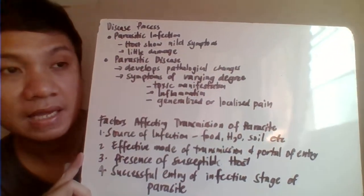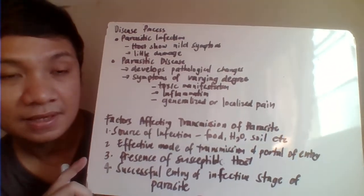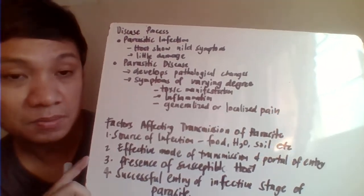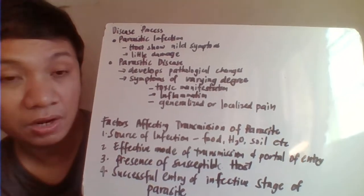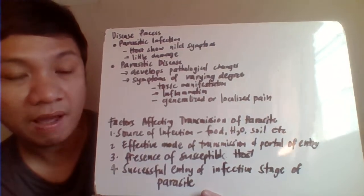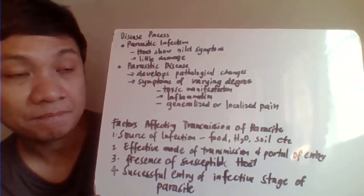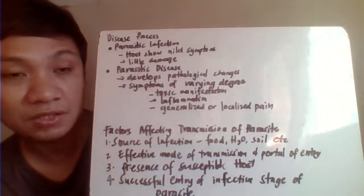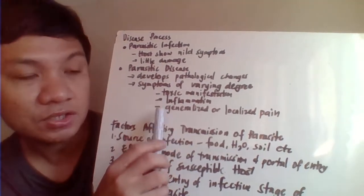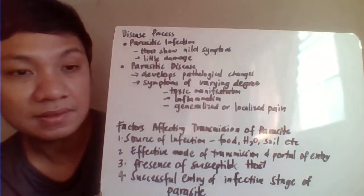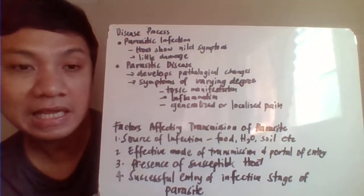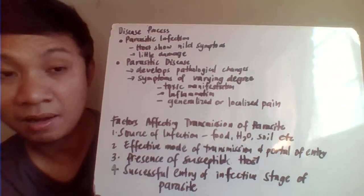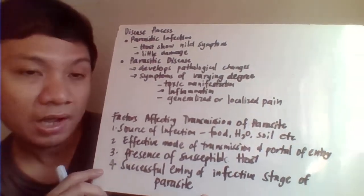Parasitic infection is characterized by mild to moderate signs and symptoms. Parasitic disease, on the other hand, involves severe manifestations, pathological changes, varying degrees of signs and symptoms, toxic manifestations, inflammatory processes, and generalized or localized pain, especially in the gastrointestinal tract, which is where many parasitic infections occur.